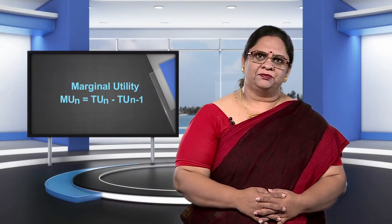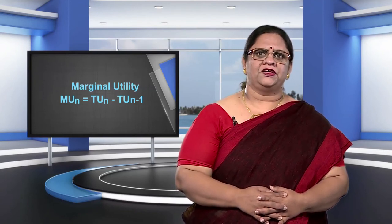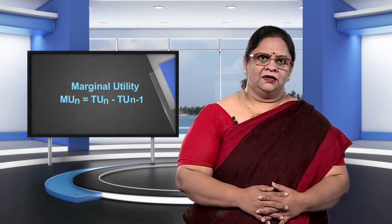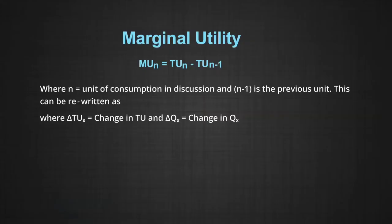We can state the relation between total utility and marginal utility algebraically as follows. Marginal utility is the difference between total utility of the nth unit minus the total utility of the (n-1)th unit. Here, n is the unit of consumption under discussion and n-1 is the previous unit. This can also be rewritten as marginal utility equals the change in total utility divided by the change in quantity, which is qx.